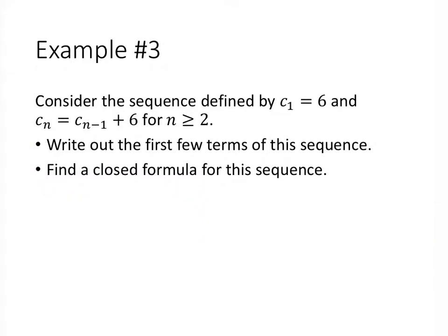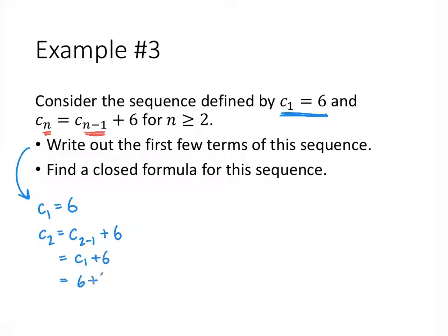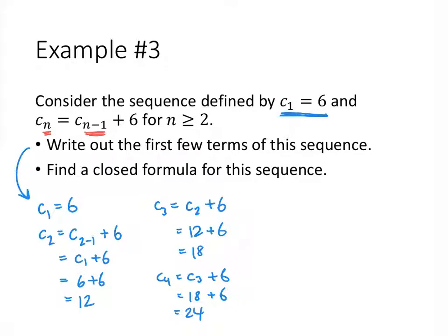For this last example, we're given a recursive definition and asked to write out the first few terms and then find a closed formula. c₁ is 6 — they tell us that, so we just copy it. For c sub 2, our definition says cₙ = cₙ₋₁ + 6, so c₂ = c₁ + 6 = 6 + 6 = 12. c₃ = c₂ + 6 = 12 + 6 = 18. c₄ = c₃ + 6 = 18 + 6 = 24. So our sequence is 6, 12, 18, 24, and so on.